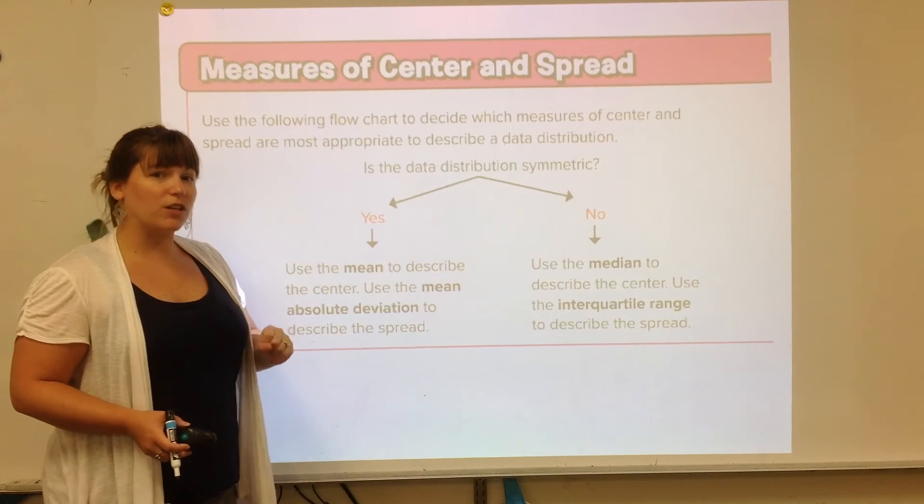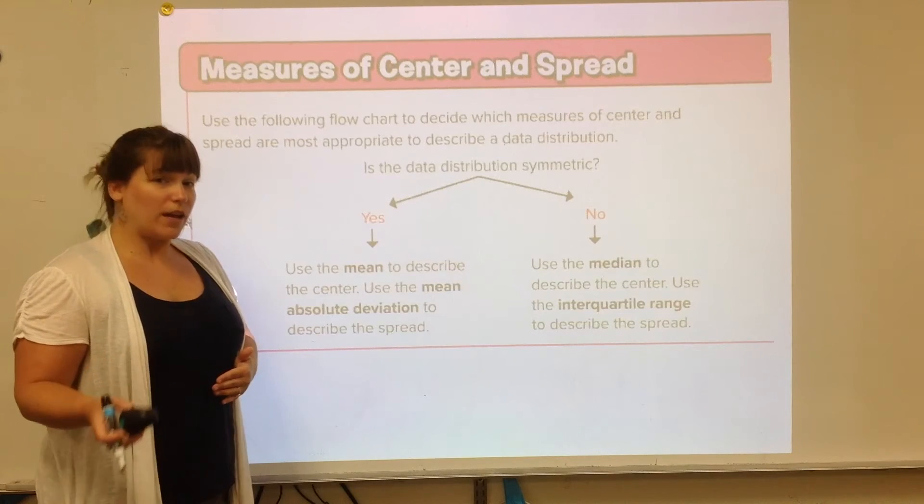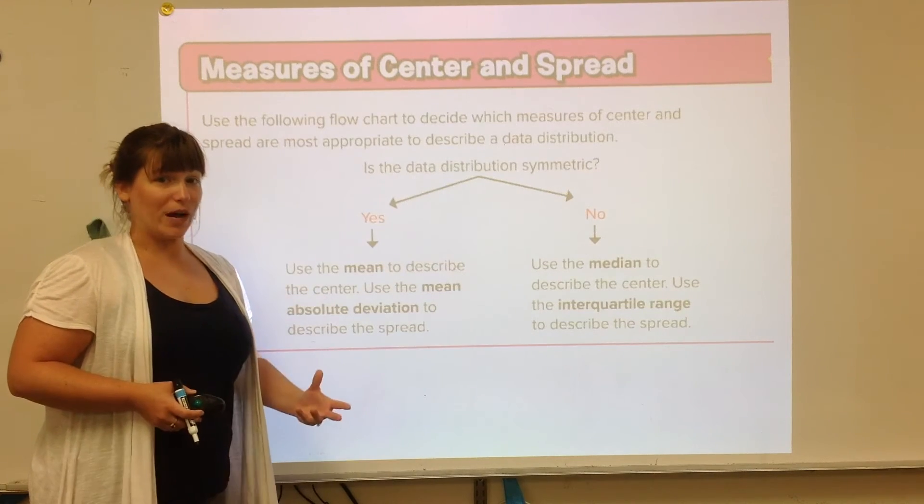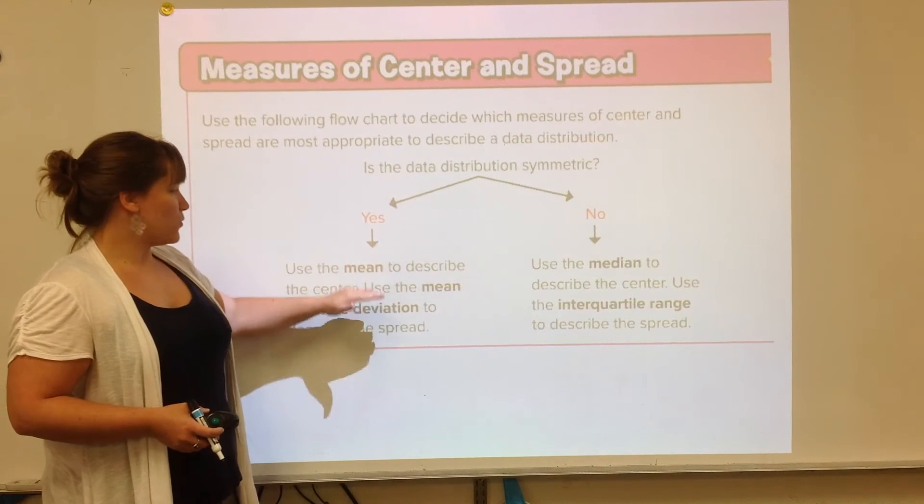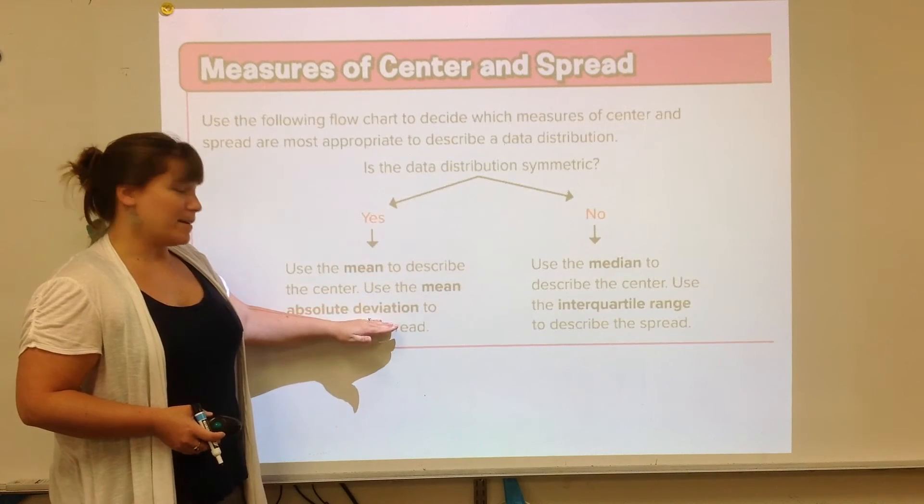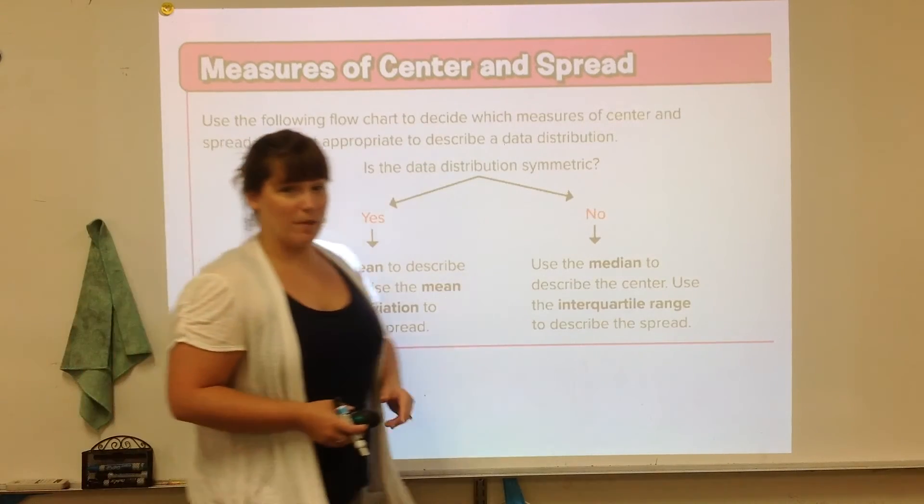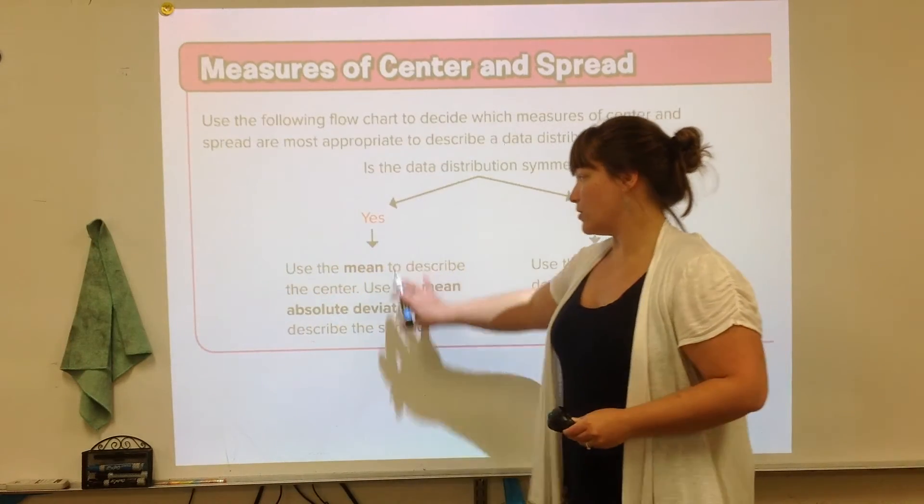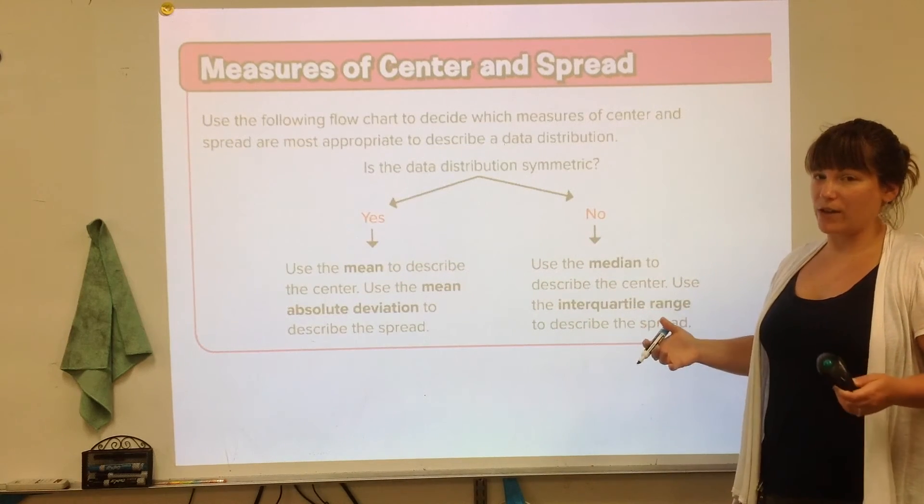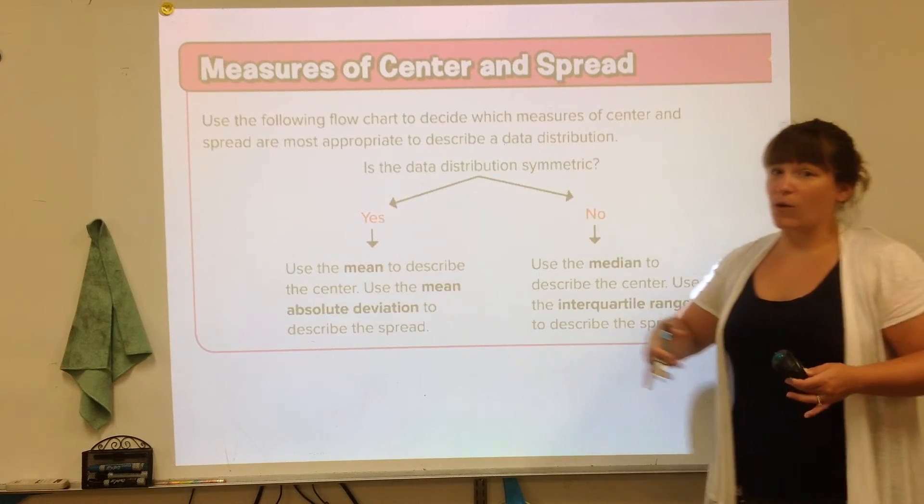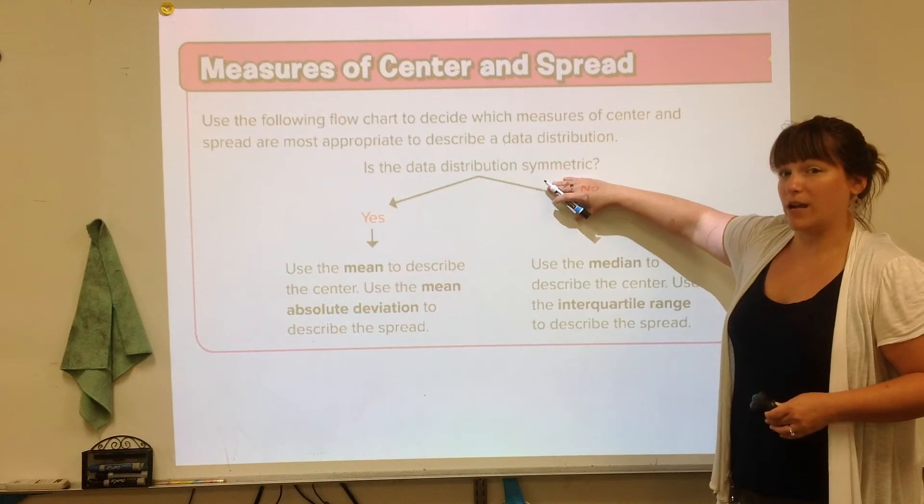Tomorrow we're going to also touch on this idea of measures of center and spread when a graph is either symmetrical or not. If the data is symmetrical, yes, we are going to use the mean and the MAD to describe the spread. If it's not symmetrical, we can't use these two. Instead, we're going to use the median and the IQR to describe the spread. Again, the spread means how are they arranged? How are they distributed? It depends on whether it's symmetrical or not.